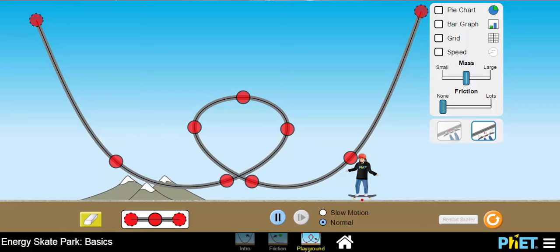Let's go ahead and see what this looks like when you put the skater on. You simply click and drag the skater, and you can put the skater anywhere on the track and then just let go. And there goes our skater through the loop, back to the other side.